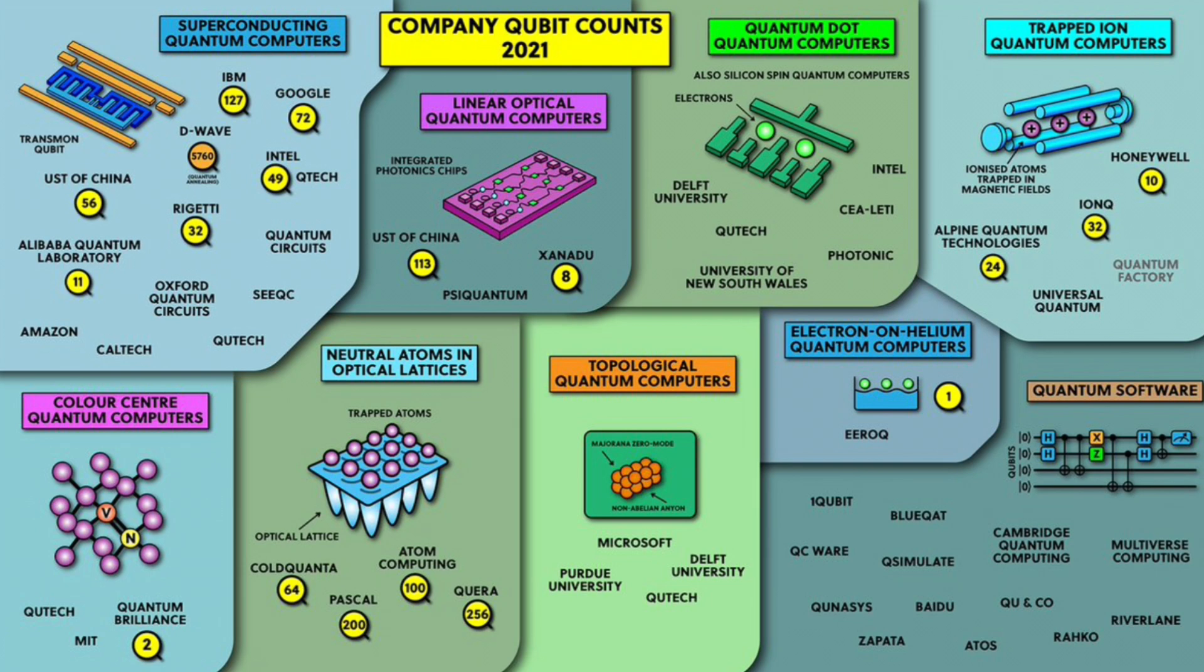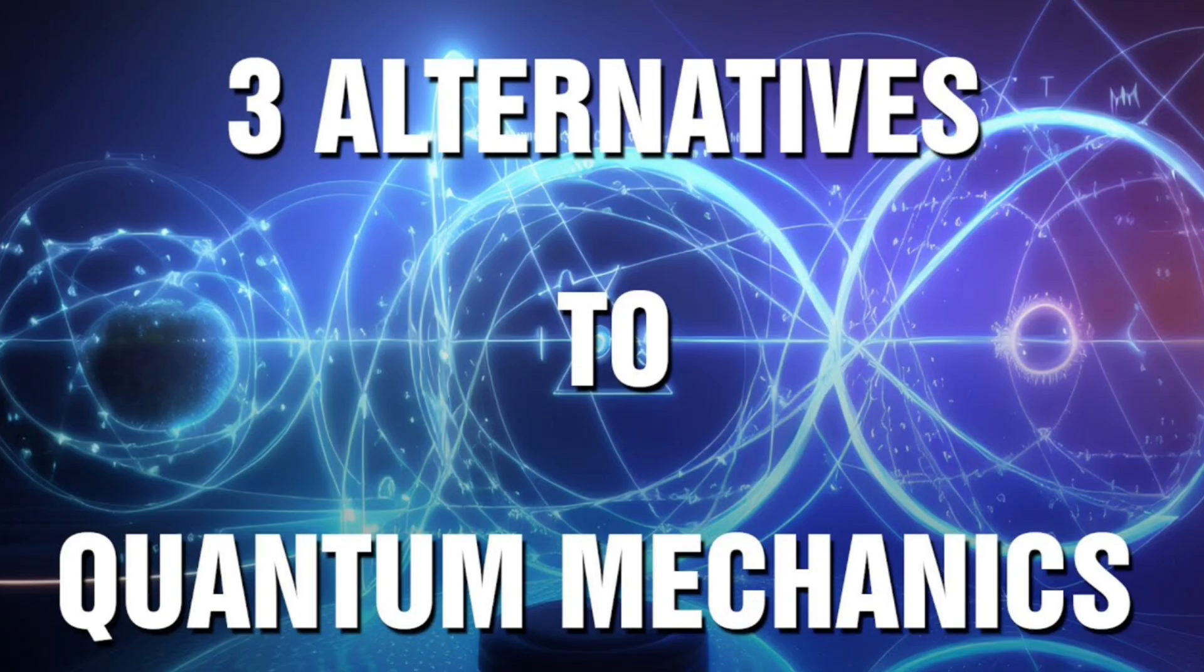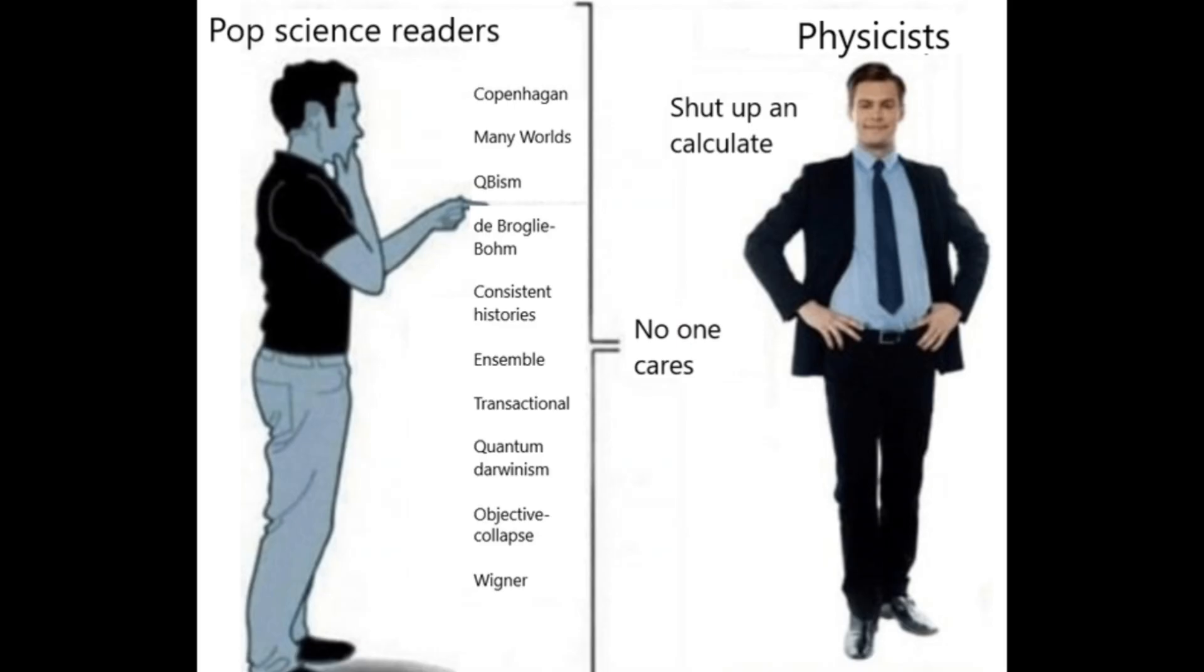Quantum Gravity Theories. Efforts to create a theory of quantum gravity, such as string theory and loop quantum gravity, aim to unify quantum mechanics with general relativity and address this gap, although none are yet complete or experimentally verified.